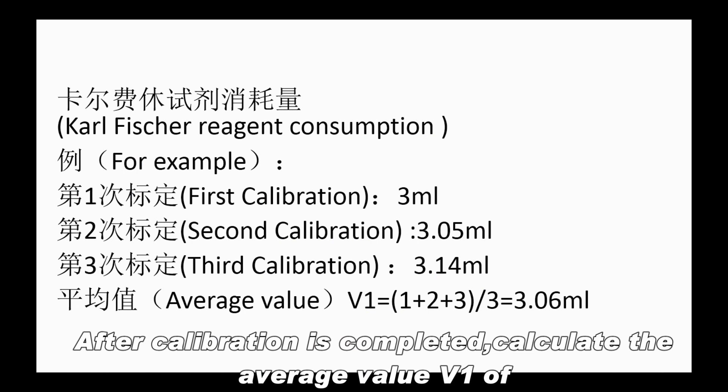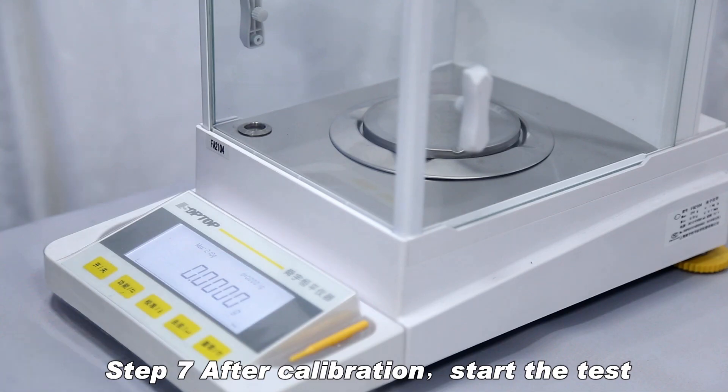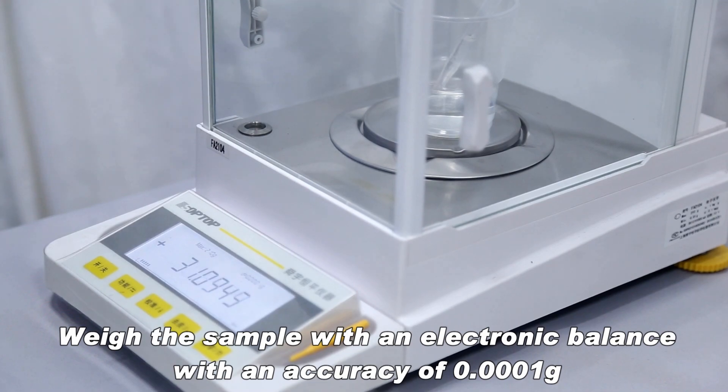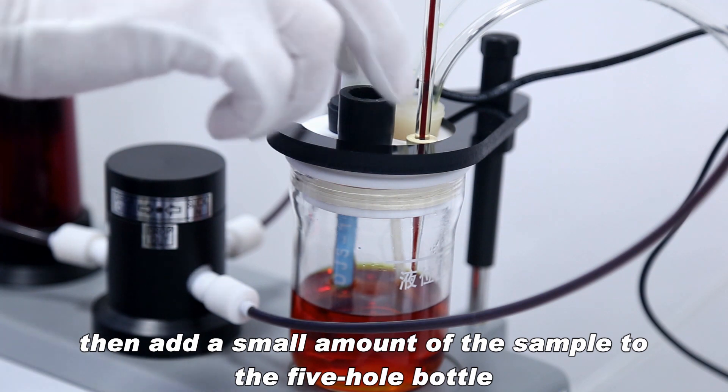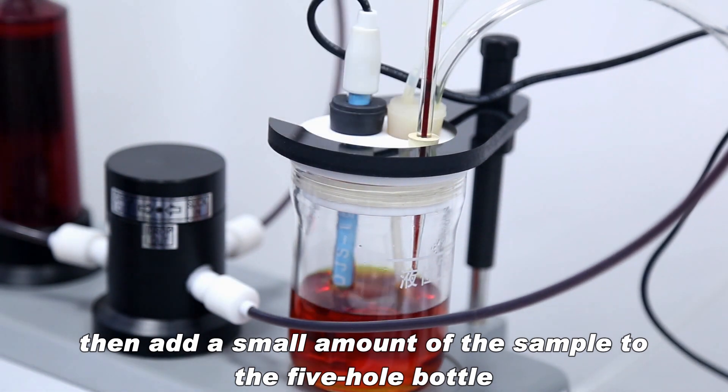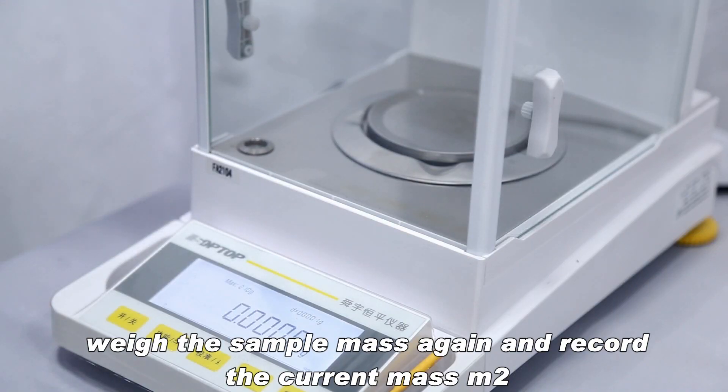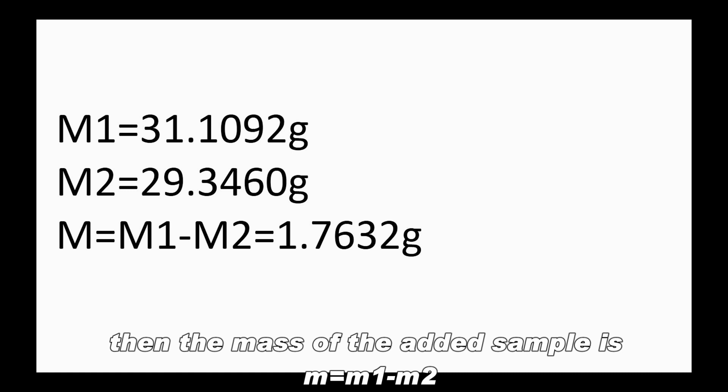After calibration is completed, calculate the average value B1 of the amount of Karl Fischer to be consumed by titrating 10 µL of pure water. After calibration, start the test. Weigh the sample with an electronic balance with an accuracy of 0.0001 grams and record the current mass M1. Then add a small amount of the sample to the 5-hole bottle. Weigh the sample mass again and record the current mass M2. Then the mass of the added sample is M equals M1 minus M2.